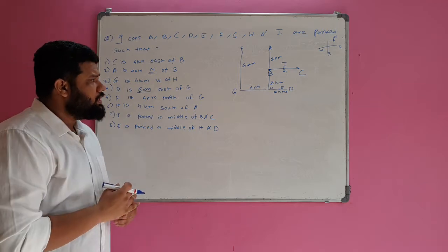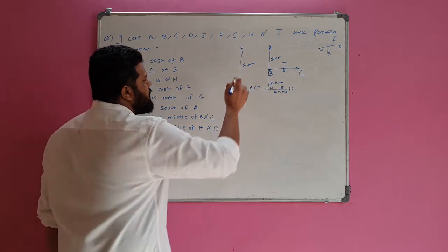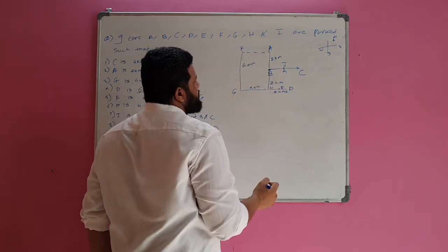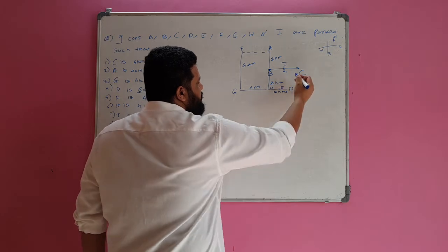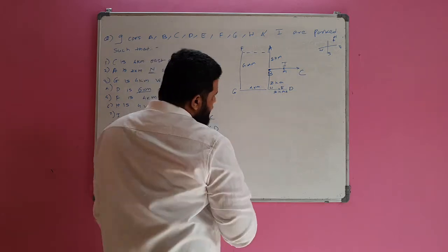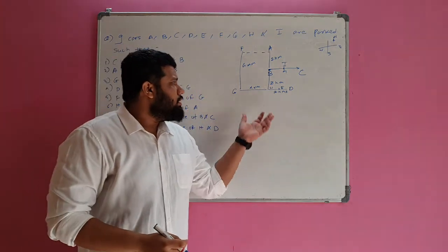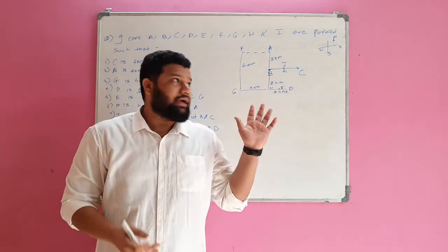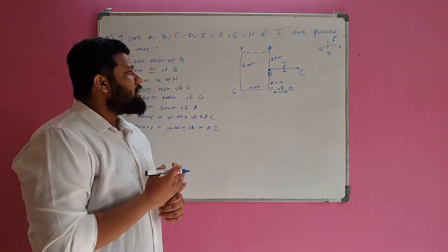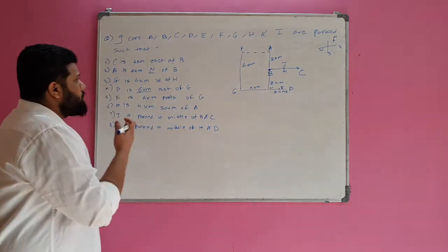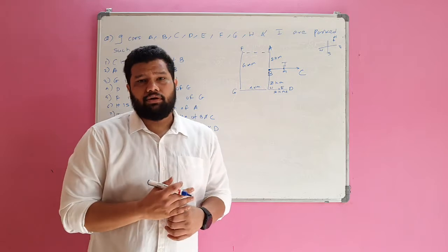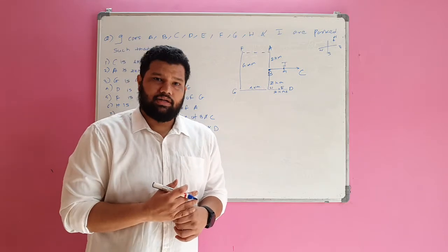The sequence in the question was mostly given in order, with just one sentence shuffled to cause confusion. Once the diagram is drawn, many questions can be asked: distance between F and A (4 km), C and D, I and D, etc. You can get different shapes — squares, rectangles, triangles — and calculate easily. Read the question properly and you can save time.